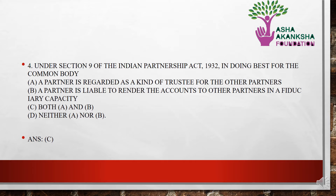The next question is: under Section 9 of the Indian Partnership Act 1932, in doing best for the common body, (a) a partner is regarded as a kind of trustee for the other partners, (b) a partner is liable to render accounts to other partners in fiduciary capacity, (c) both A and B are correct, or (d) neither A nor B. The correct answer is option C — both A and B are correct: a partner is regarded as a trustee and is liable to render accounts in fiduciary capacity.